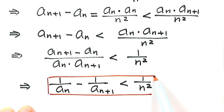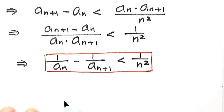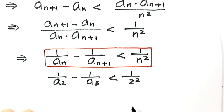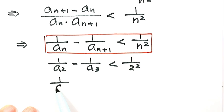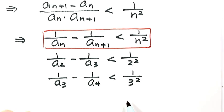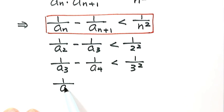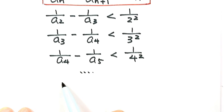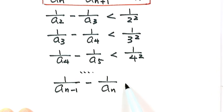Writing out the inequality for successive values: for n=2, we have 1/a₂ minus 1/a₃ less than 1/2². For n=3, we have 1/a₃ minus 1/a₄ less than 1/3². For n=4, we have 1/a₄ minus 1/a₅ less than 1/4². And continuing, for n minus 1, we have 1/aₙ₋₁ minus 1/aₙ less than 1/(n-1)².